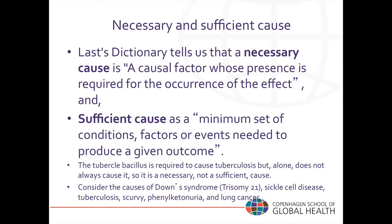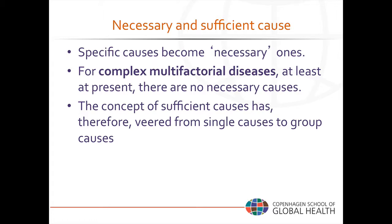Specific causes such as the tubercle bacillus or high glucose levels become necessary ones for their respective diseases. However, for complex multifactorial diseases such as obesity, at least at present, we don't have necessary causes. Therefore, the concept of sufficient causes has veered from single causes to explain disease to group causes or multiple causes, and that is very important for NCD epidemiology.